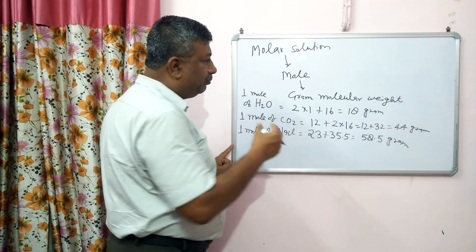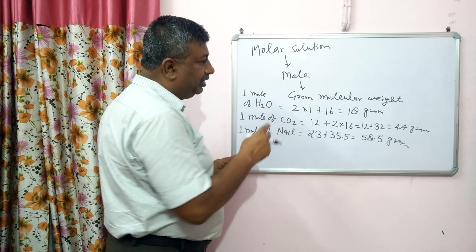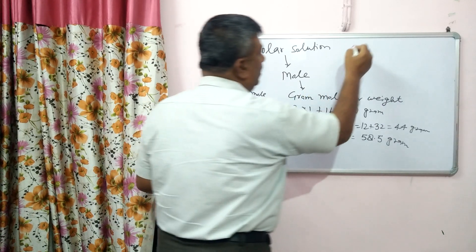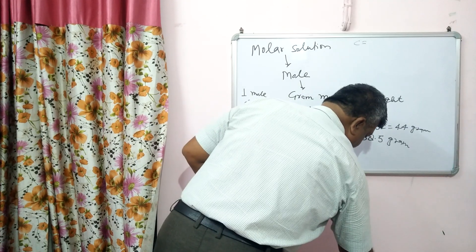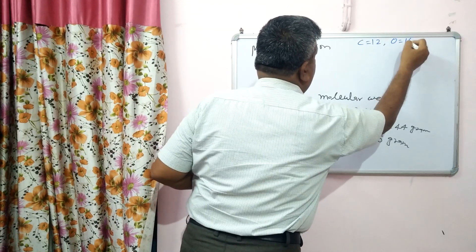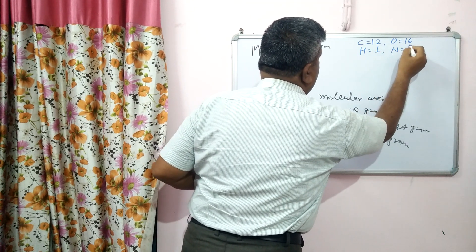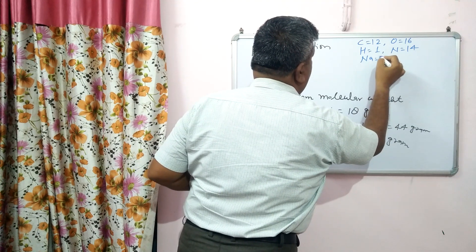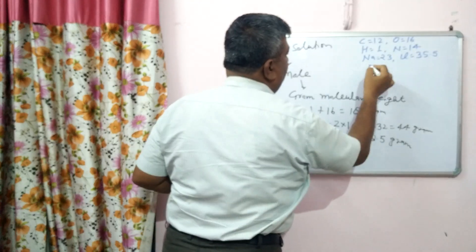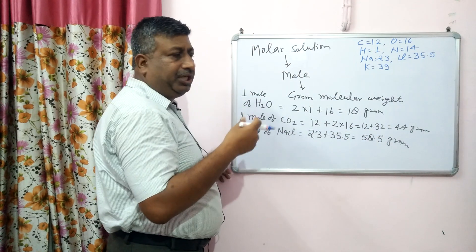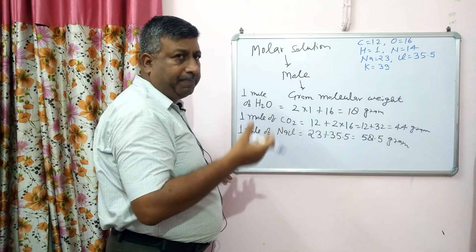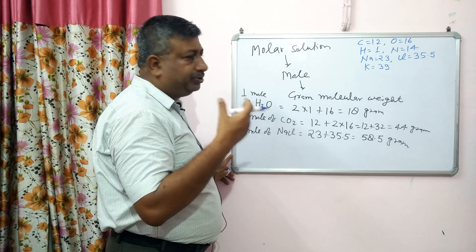So first understand what is 1 mole: it is the gram molecular weight of that substance, calculated by summing up the atomic weights. We should know the common atomic weights — for carbon it is 12, for oxygen it is 16, for hydrogen it is 1, for nitrogen it is 14, for sodium it is 23, for chlorine it is 35.5 grams, and for potassium it is 39. We should remember at least C, H, O, N for calculations, though in examinations atomic masses are usually given in the question paper.